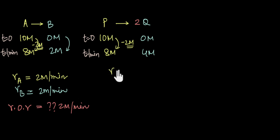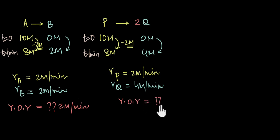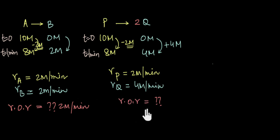If we try to calculate the rate of disappearance of P, 2 molar of P disappears in one minute, so the rate of disappearance of P is 2 molar per minute. Now 4 molar of Q is produced in one minute, so the rate of appearance of Q is going to be 4 molar per minute. Again, if I ask you what the overall rate of the reaction is — the rate of disappearance of P and the rate of appearance of Q are clearly not equal. This time 2 molar of reactants give rise to 4 molar of products in one minute. So what does the overall rate of a reaction even mean?